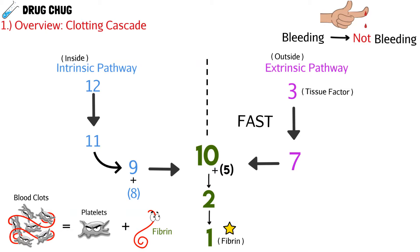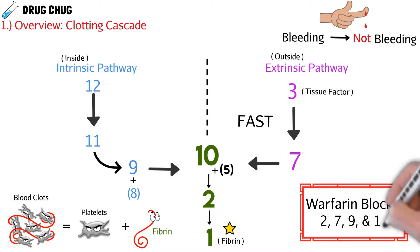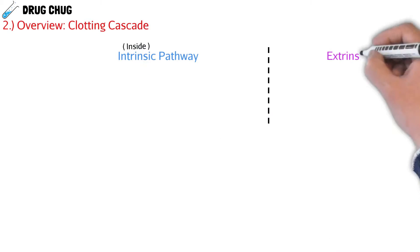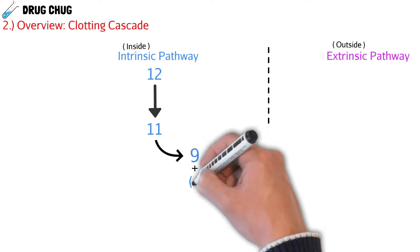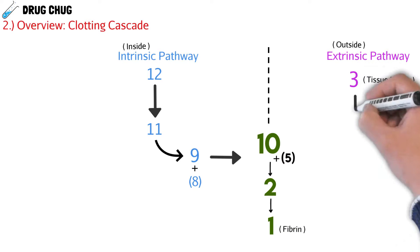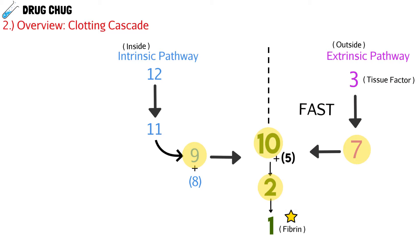So where does warfarin come in? The most important thing to take from this video: warfarin blocks clotting factors 2, 7, 9, and 10. The whole goal is to stop producing fibrin and prevent too many blood clots from forming. Now that we understand the clotting cascade, let's talk about warfarin a little deeper and see how it helps prevent blood clots.